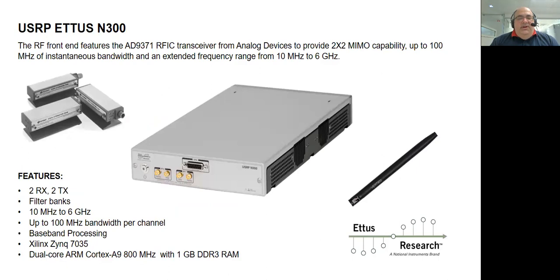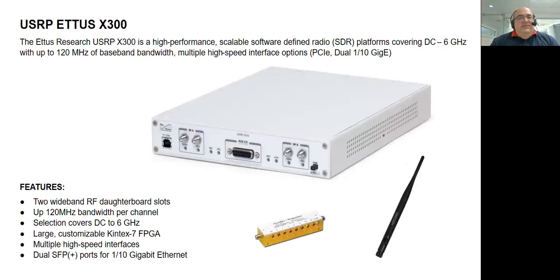This is a widely used USRP in the market — the Ettus N300. It provides 2x2 MIMO, up to 100 MHz of bandwidth, and can operate between 10 MHz and 6 GHz. We are going to use programmable attenuators and antennas with it. The other unit is the Ettus X300, covering from DC to 6 GHz with 120 MHz of bandwidth. We will again use Ettus antennas and programmable attenuators.